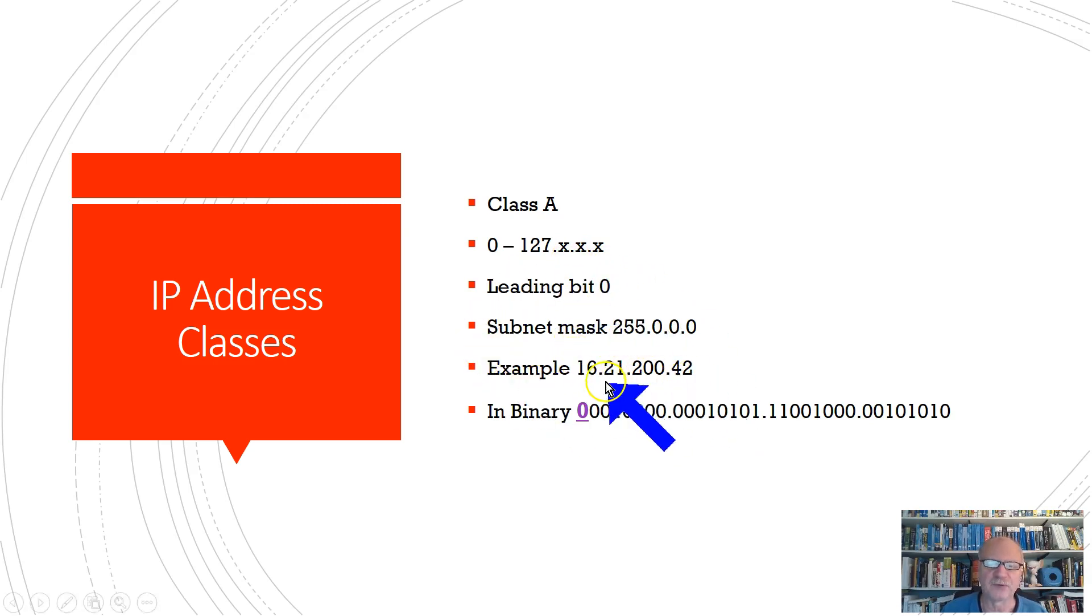Here's just an example, 16.21.200.42. Notice that 16 is inside of this range. And the subnet mask, of course, is going to be 255.0.0.0, meaning that this portion is the host ID. And here's what it looks like in binary with that leading zero here.